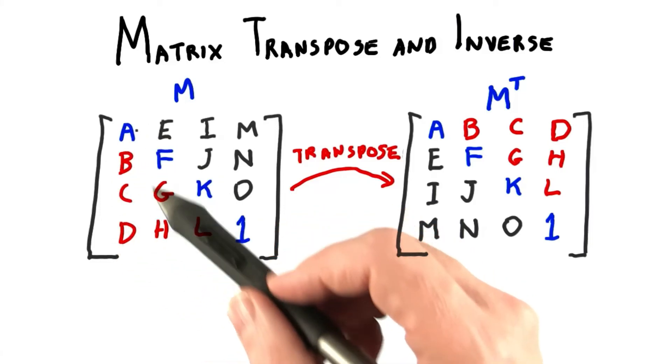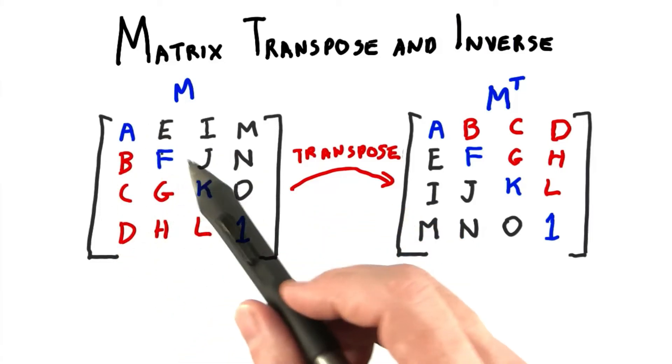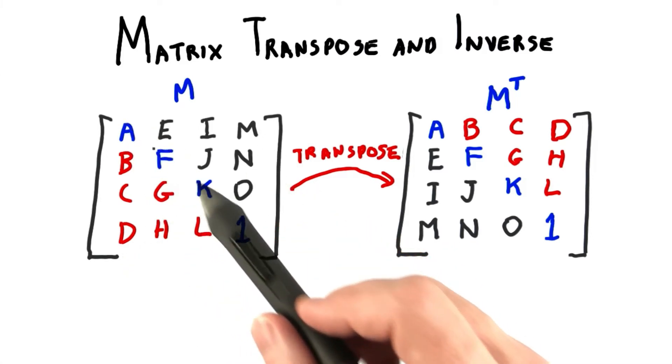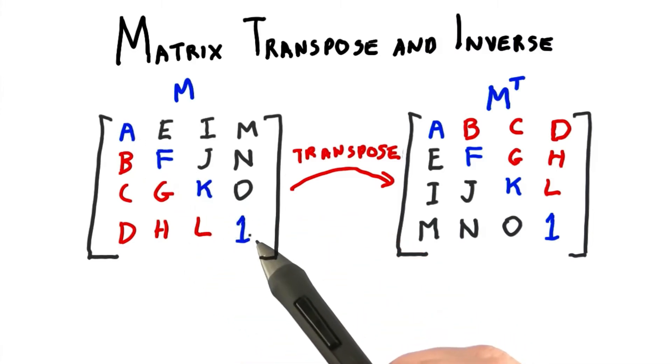The transpose of a matrix is this original matrix with its rows and columns flipped along the diagonal. There are two diagonals, but the one I mean is from the upper left to the lower right. It's where we put the scale factors, for example.